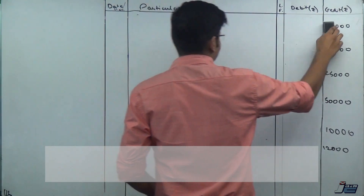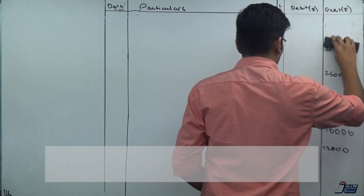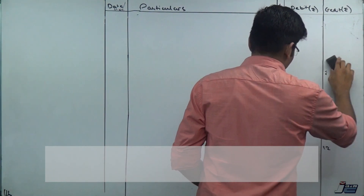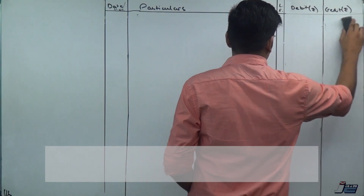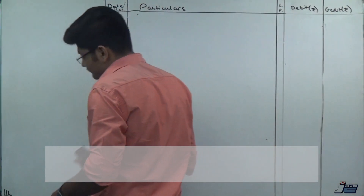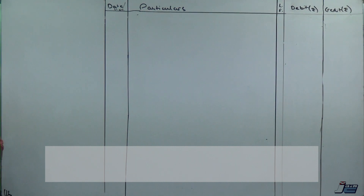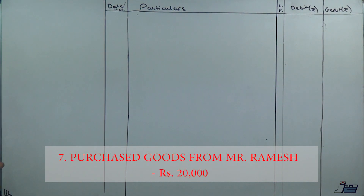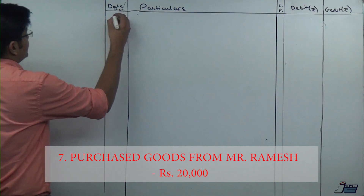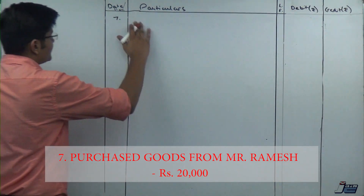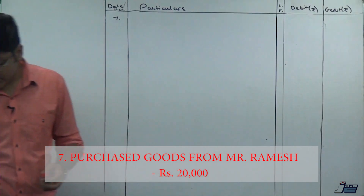All these first six entries are actually pretty easy, but we have to complete 50 and slowly and gradually the difficulty is going to increase. We start off with number seven: purchased goods from Mr. Ramesh, amount 20,000.